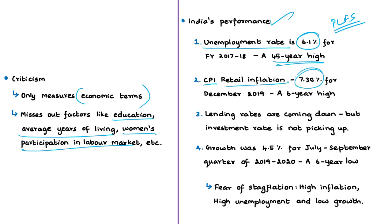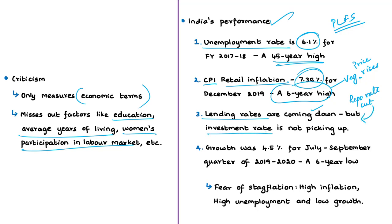The 7.35% inflation rate is beyond the RBI's targeted range of 2 to 6 percent. In this component, India is not performing well. The next component is lending rates. Over time, lending rates in India have come down as commercial banks reduced their rates based on successive cuts in the repo rate by the RBI. However, the investment rate is not picking up as investors are worried about the persisting economic slowdown. On a whole, India's performance in this component is average. The last component is GDP per capita growth. There is a persisting economic slowdown in India — for the July to September quarter of 2019–20, India's economic growth was only 4.5%, a six-year low.